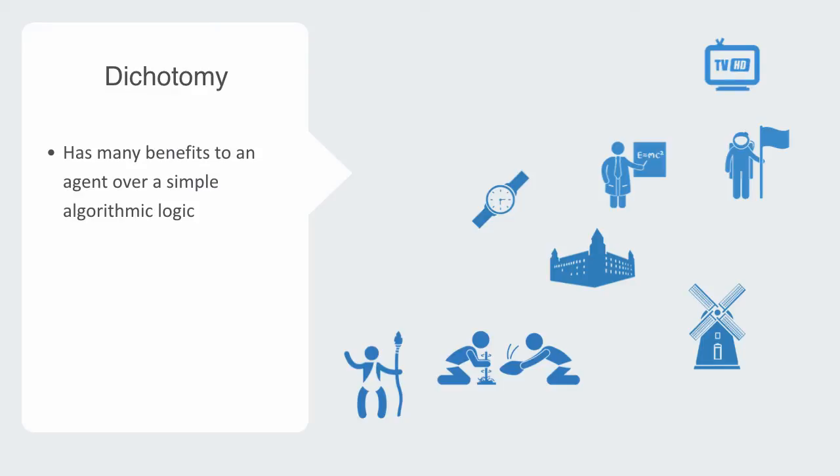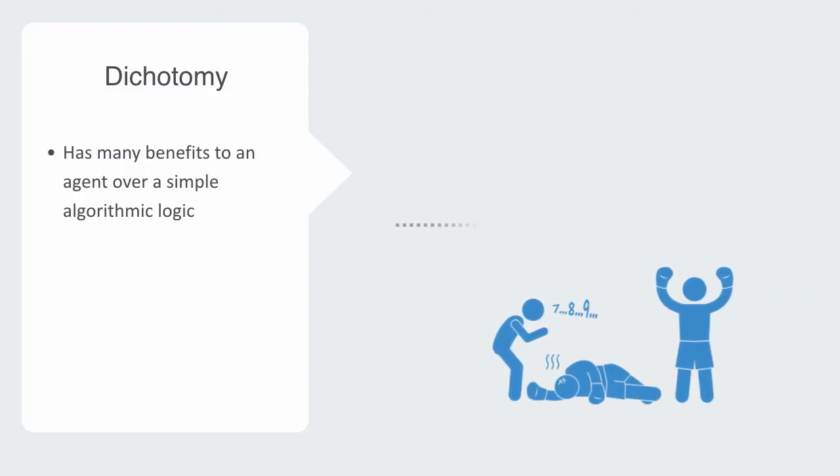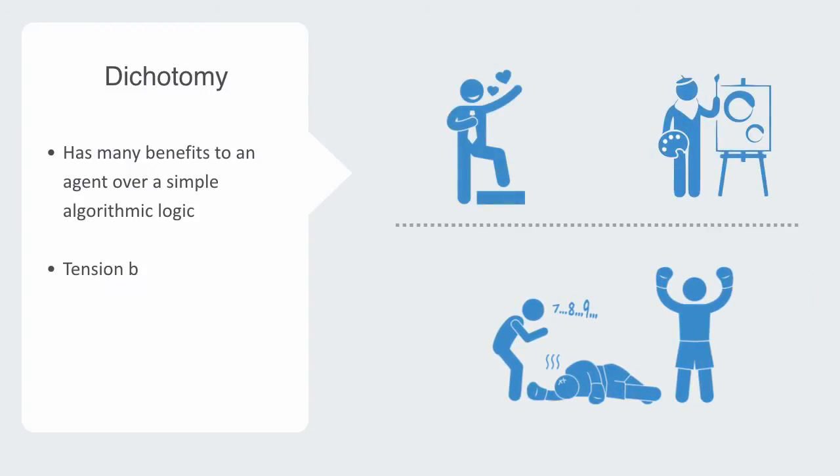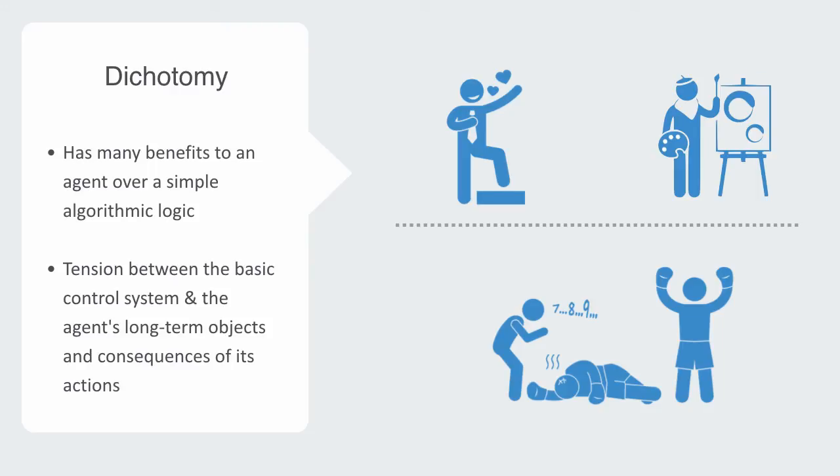But of course, it comes at a cost, and not only in terms of the physical energy to maintain the system, but there is now a tension between the basic control system that is designed to react to stimulus thus ensuring immediate self-preservation, and the schema that creates a broader vision interested in the system's long-term objectives and consequences of its actions.